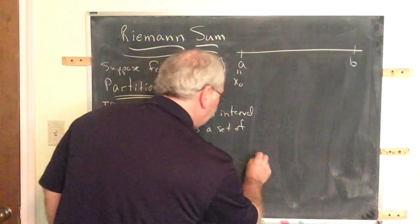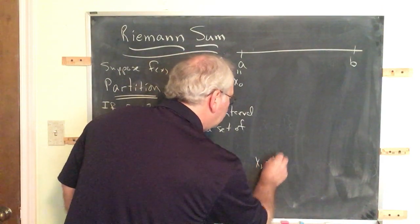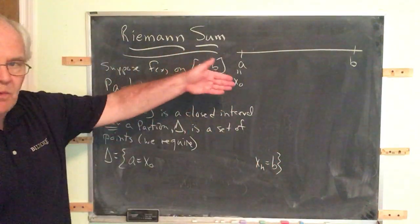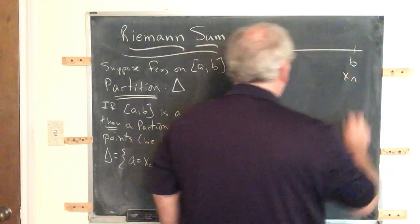And when we finish, xn must equal b, the right endpoint. So this must be x sub n.